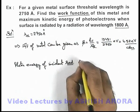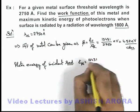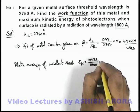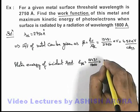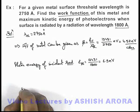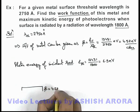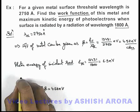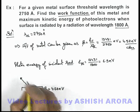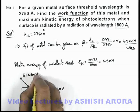So photon energy can be written as, which is incident onto it, as 12431 divided by 1800. On simplifying, we are getting it 6.9 electron volt. That means on a metal surface which is having a work function of 4.52 electron volt, photons are allowed to incident which have energy equal to 6.9 electron volt.